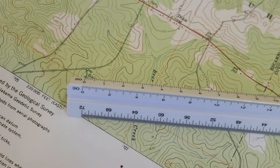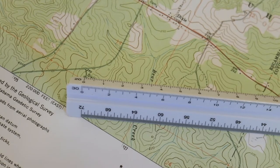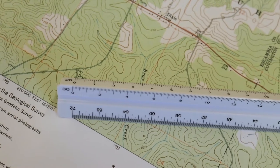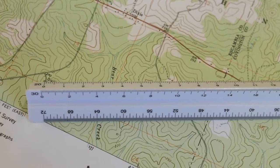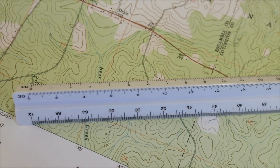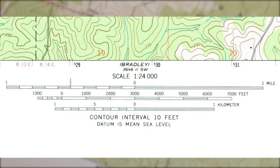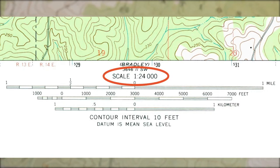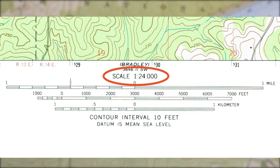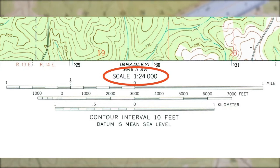An engineer scale can be used to estimate straight line distances on a topo map. To do this, first determine map scale using the scale bar or representative fraction printed on the map. For this example, the map scale is 1 to 24,000, which means that 1 inch on the map represents 24,000 inches on the ground.